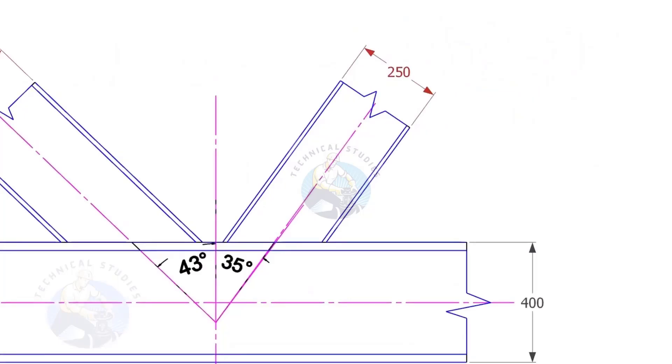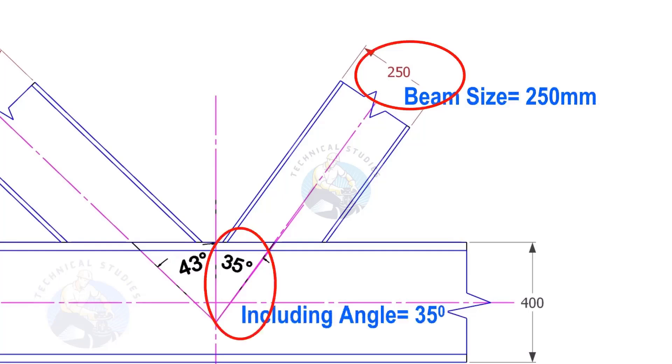Here, the size of the beam is 250 and the including angle is 35. Let us calculate the cutback.